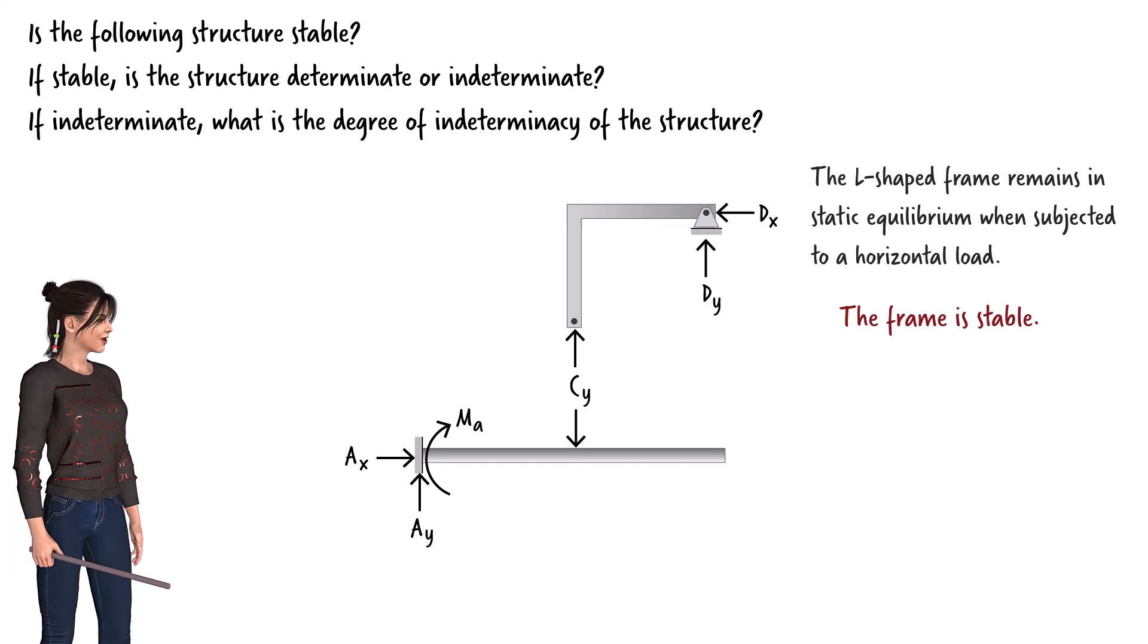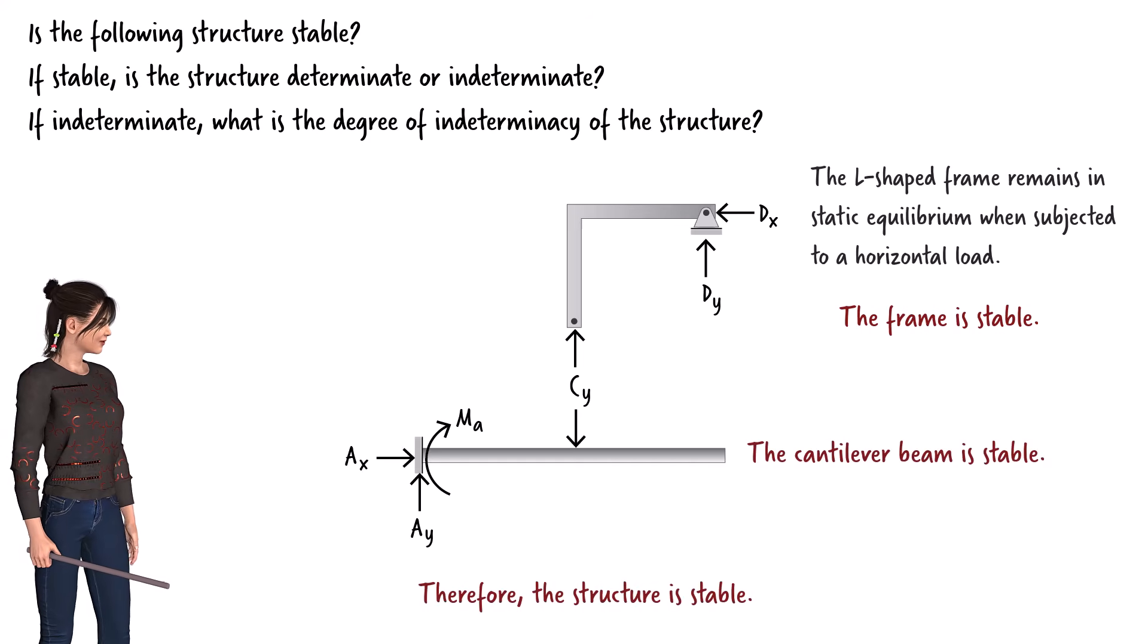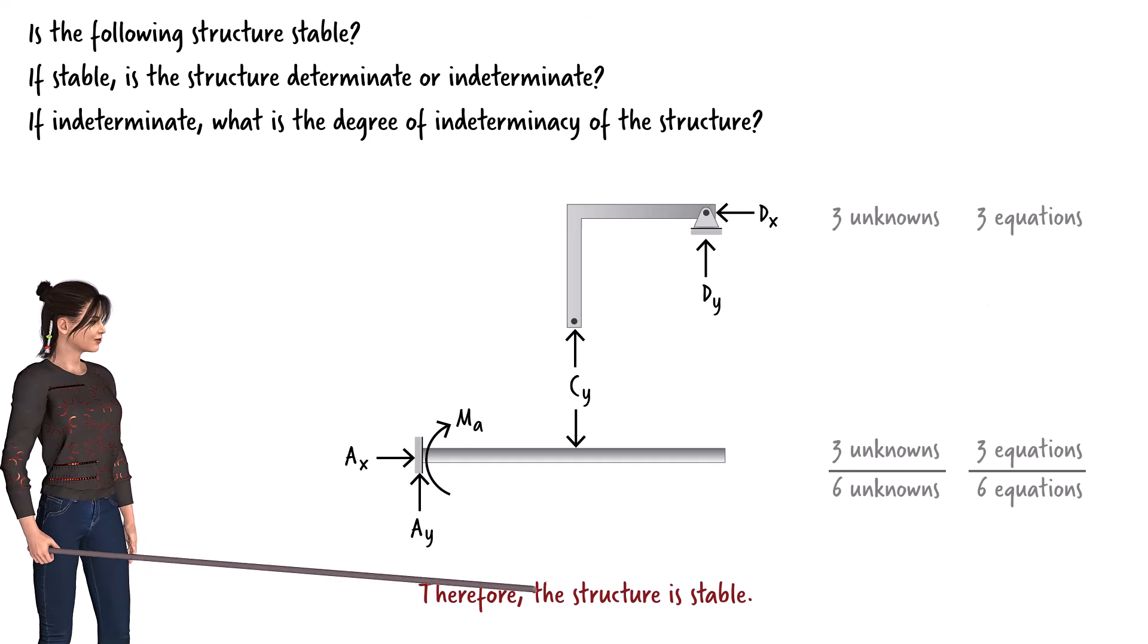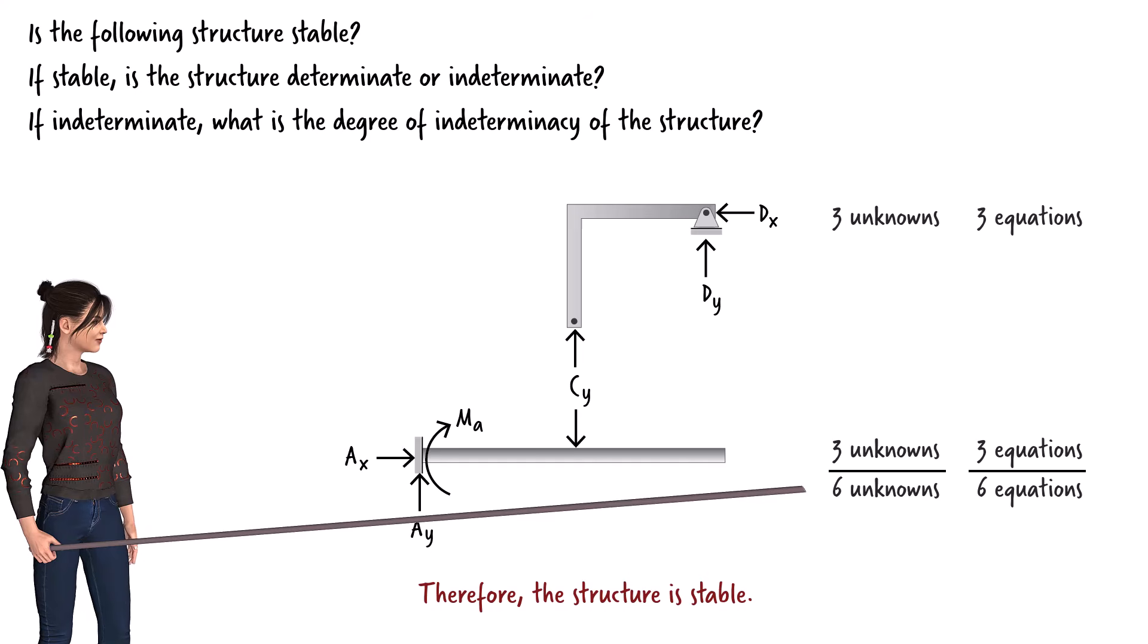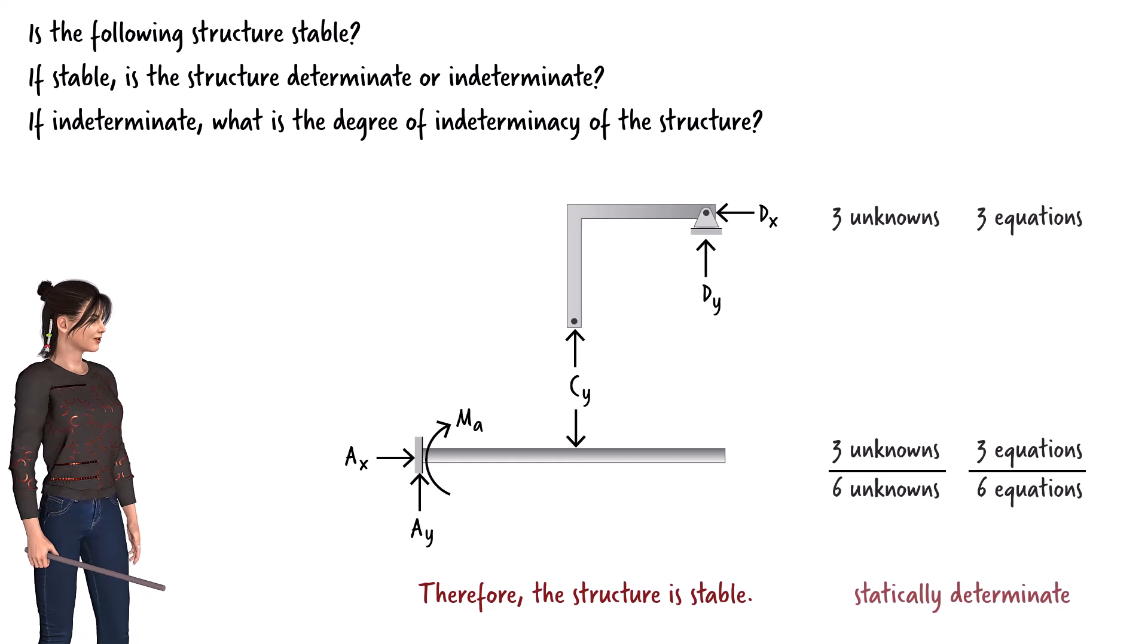By removing one of the fixed supports, we have turned the beam into a cantilever, which we know is a stable structure. Therefore, the system as a whole is stable. For this configuration, there are a total of six unknown reaction forces and six equilibrium equations. Since the number of equations equals the number of unknowns, the system is statically determinate.